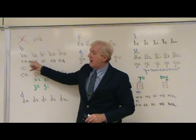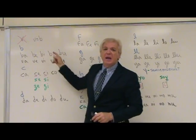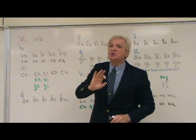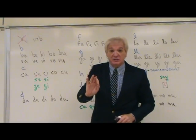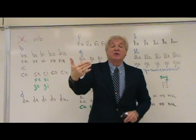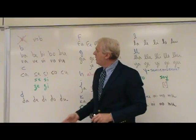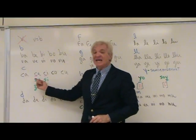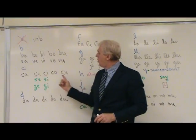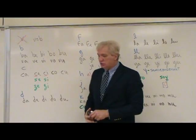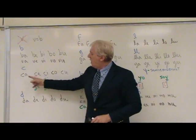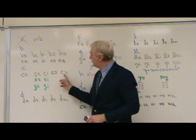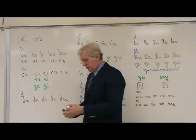Ba and Ba, Be, Bi, Bo, Bu — exactly the same. There is no V anywhere in Spanish; although we write it, we pronounce it as B. For the letter C: Ca, Ce, Ci, Co, Cu — these are the hard C sounds.